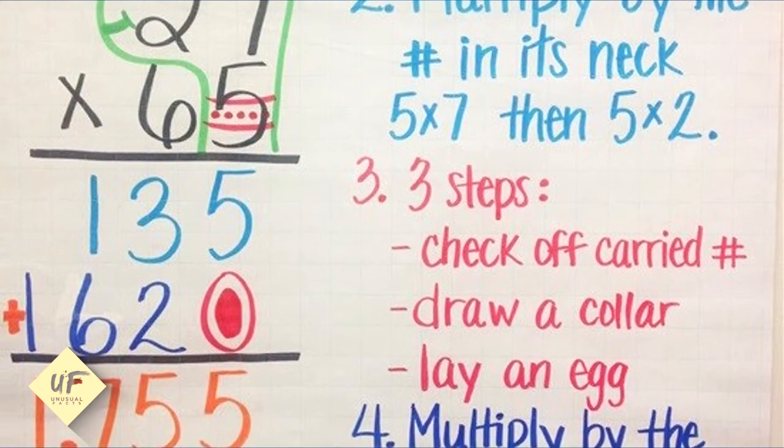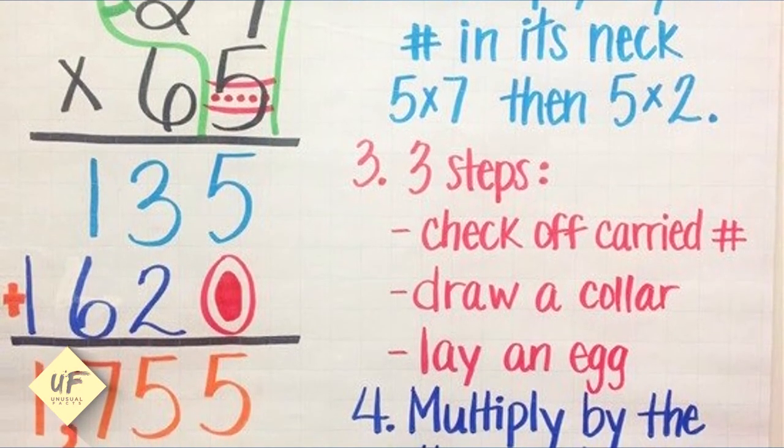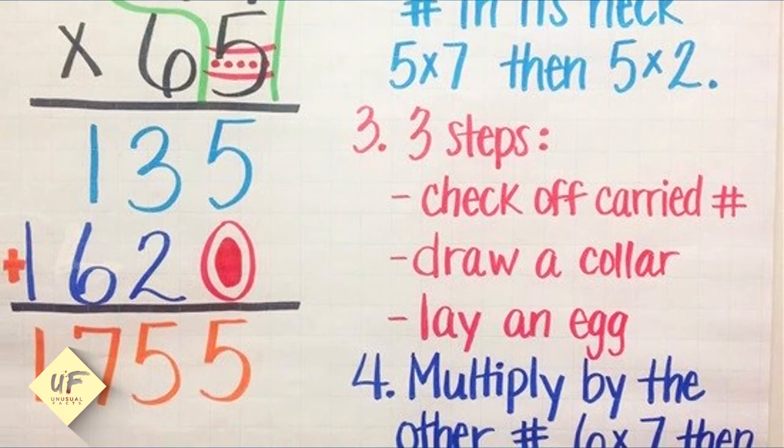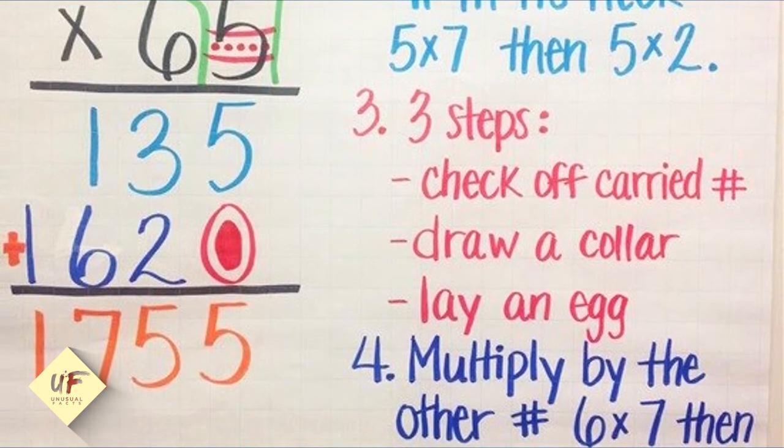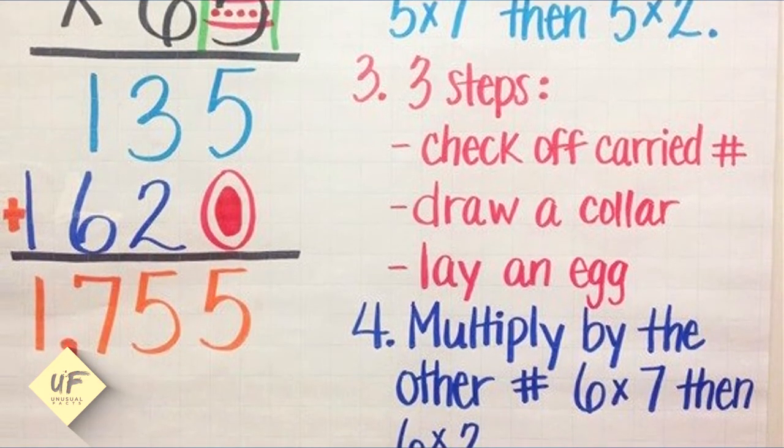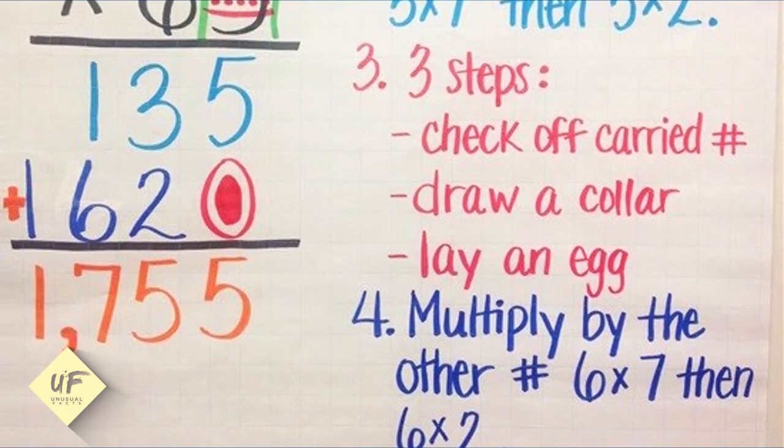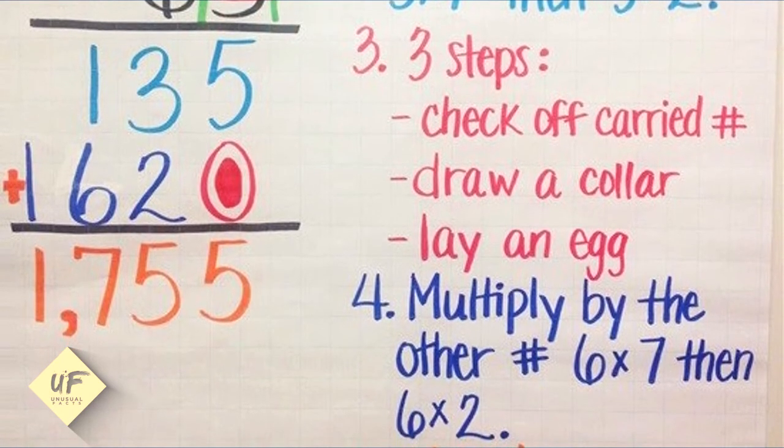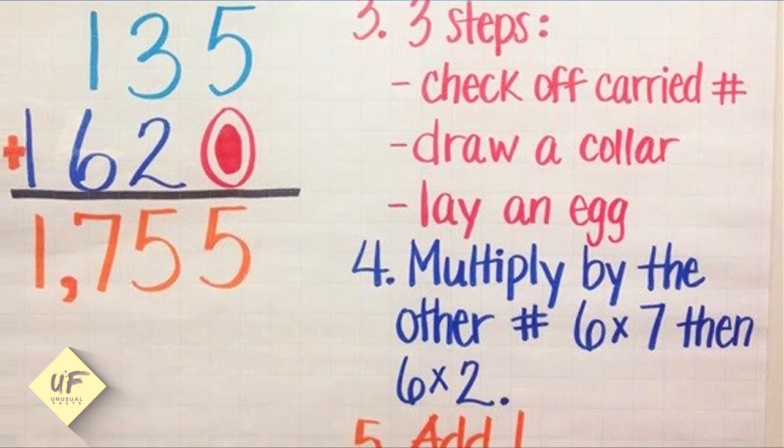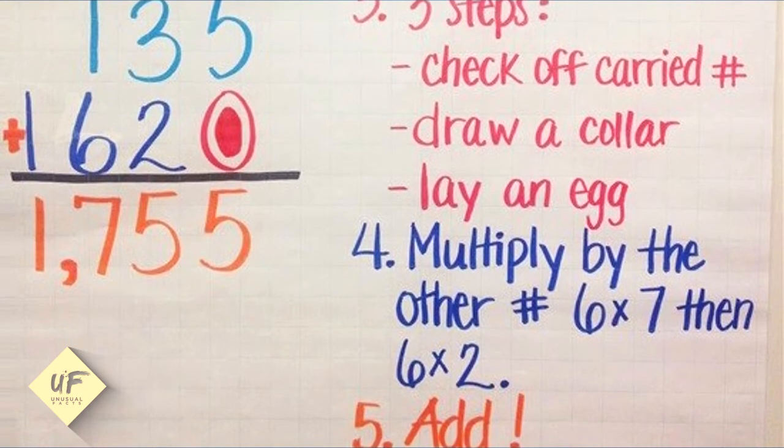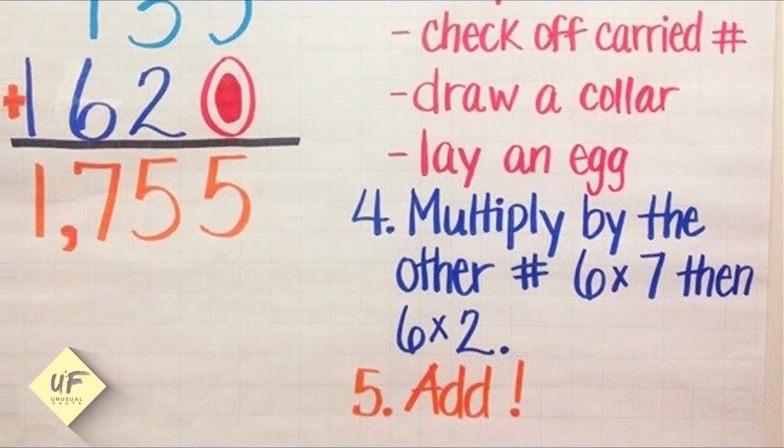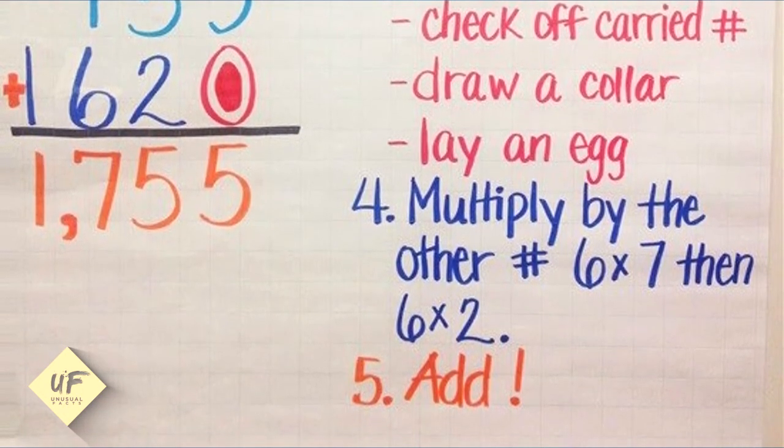Step 2: Multiply the number in its neck, 5 by 7 and then 5 times 2. Step number 3 is 3 steps. First, check off the carried number. Then you'll want to draw a collar. You'll do this on the 5. Then this turtle's going to lay an egg. You'll do this under that second 5 in the fourth row. Step number 4: Multiply by the other number, 6 times 7 then 6 times 2. Once you've done all of that, you simply add it up. 1,755. Turtle Head Multiplication: an easy way to remember which comes first.